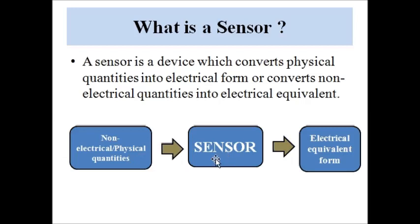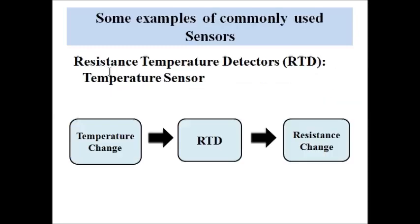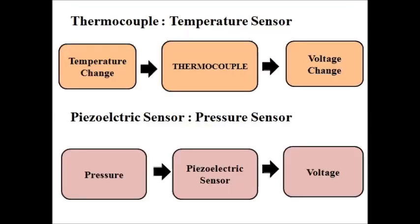Generally, a sensor converts physical quantities into electrical form, normally in the form of voltage or current signals within a standard range. Now let's know about some basic sensors used in day-to-day life, in industries, and other areas for general measurement purposes. The first is the Resistance Temperature Detector, or RTD. It is a temperature sensor — it converts temperature change into resistance change. The RTD converts surrounding, environmental, or any other temperature into a suitable change in resistance, which is then converted into a voltage or current signal by a signal conditioning circuit.